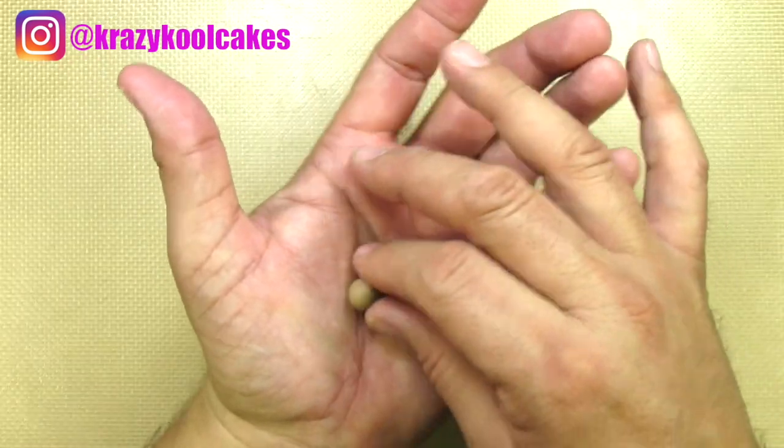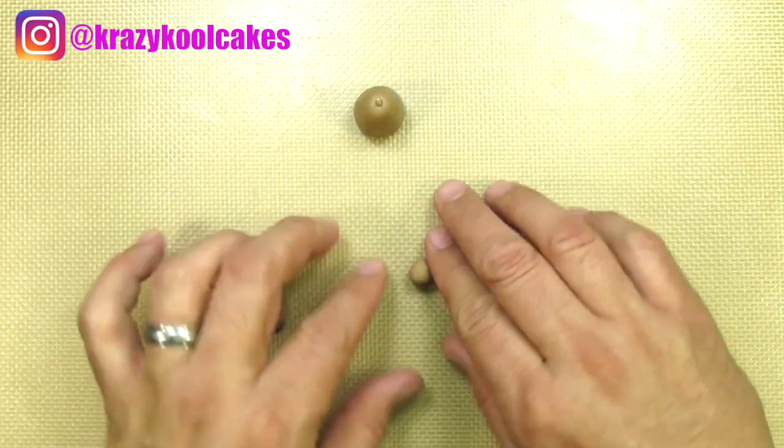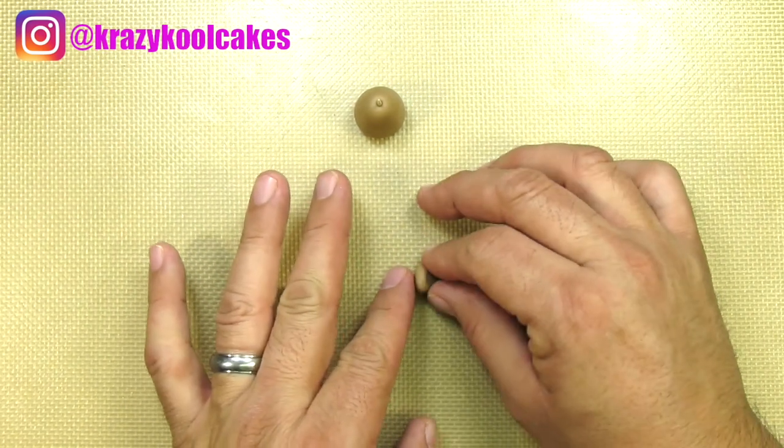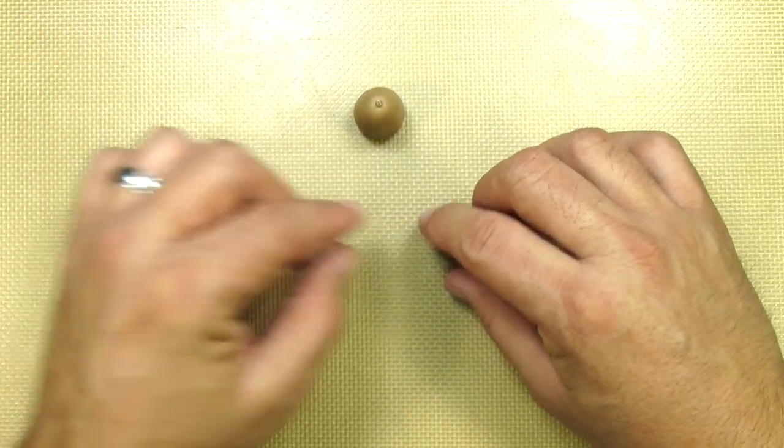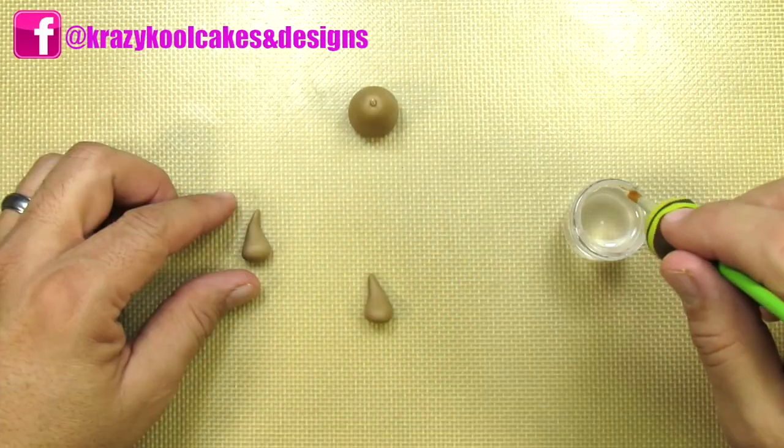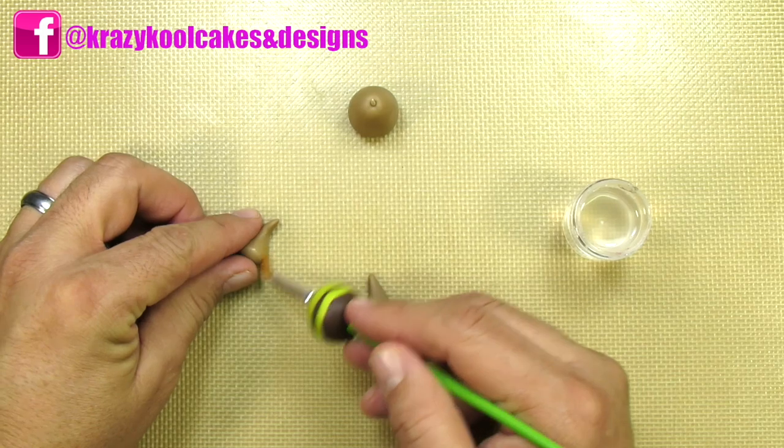To make a leg, just start off with a small ball of gum paste and roll it into a long teardrop shape. Then shape the foot like this. You want everything nice and smooth without any big dents. Plus you want to make sure that the second leg is the same exact size as the first.